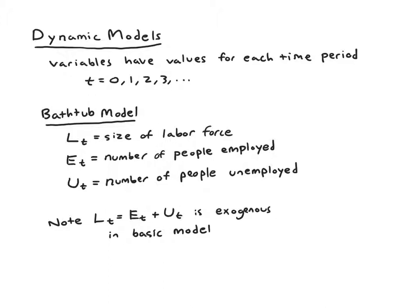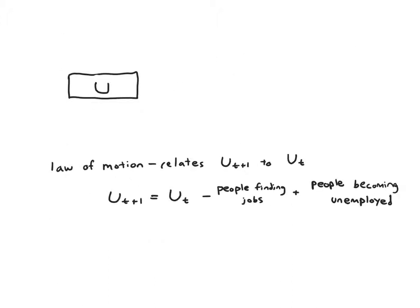A quick note that helps make this model more tractable is that only two of these variables are endogenous. Et and Ut are endogenous - they're going to be determined by the model. Lt, on the other hand, is exogenous in the basic model. So the total number of people in the labor force is fixed and what the model explains is how they shuffle back and forth between being employed or unemployed.